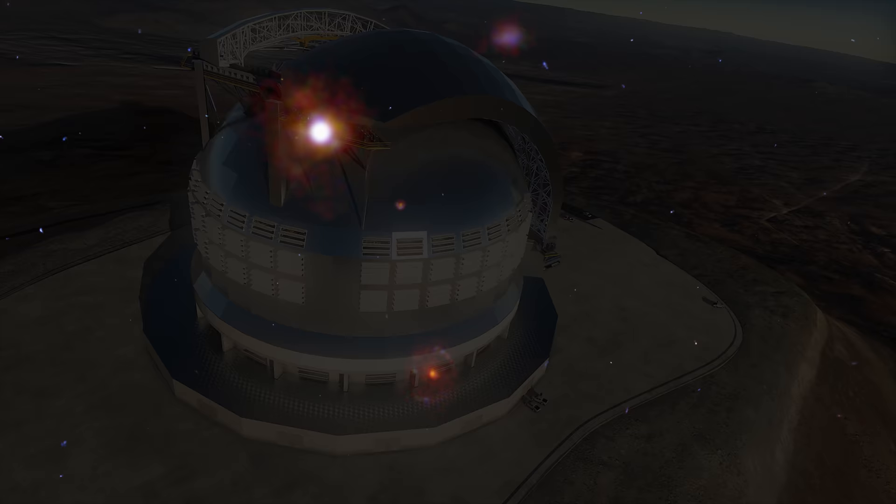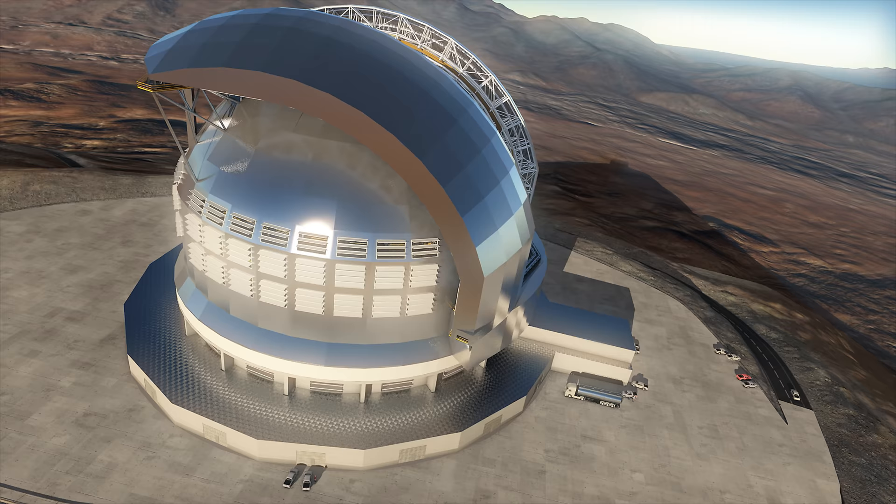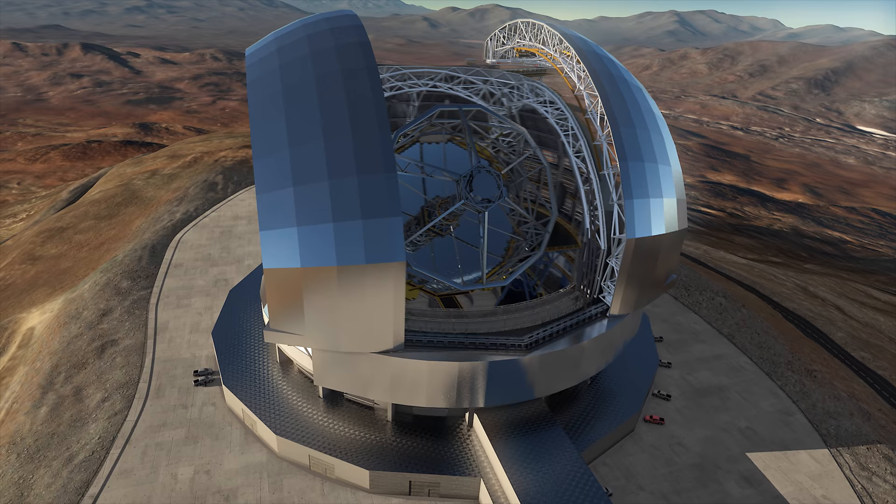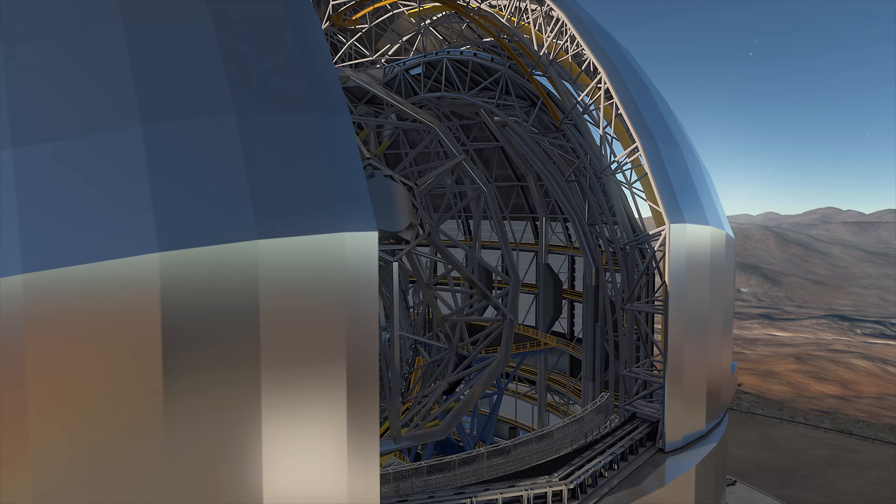The next generation of ground telescopes will radically extend our light-gathering power. The European Extremely Large Telescope, now under construction in Chile's Atacama Desert, will have a 39-meter mirror that quadruples the light-gathering power of the largest telescopes today.